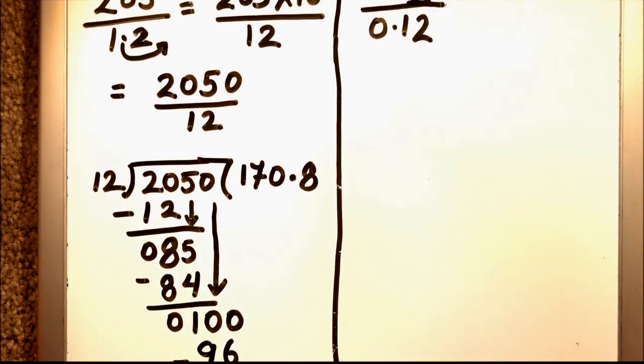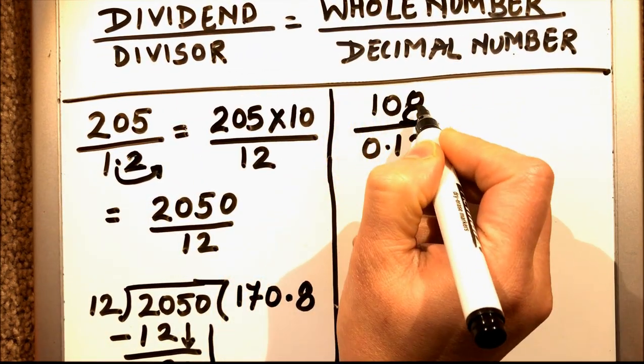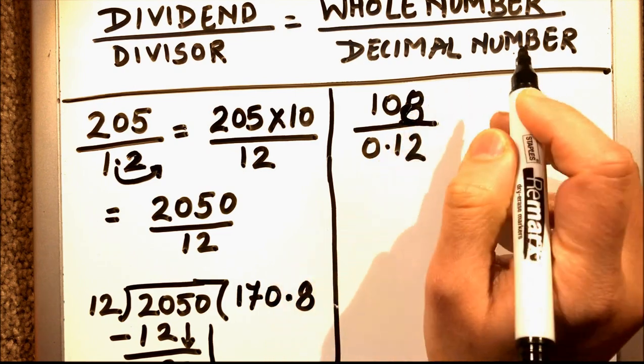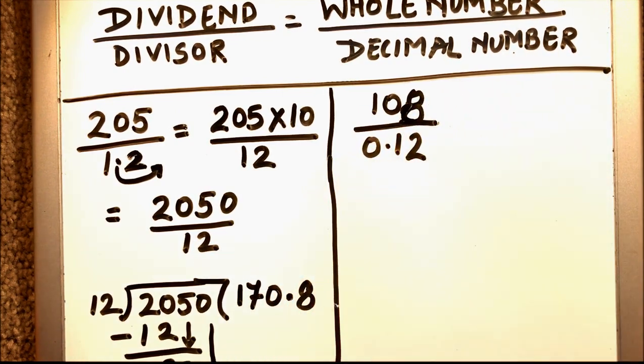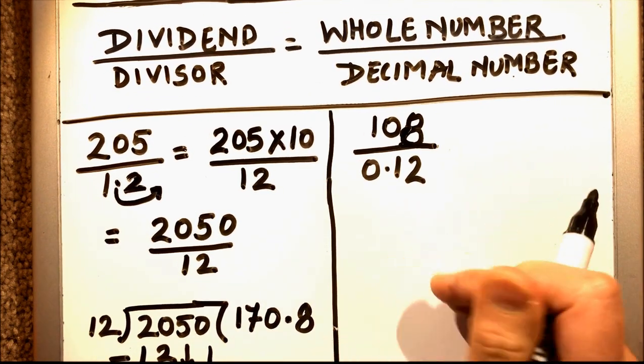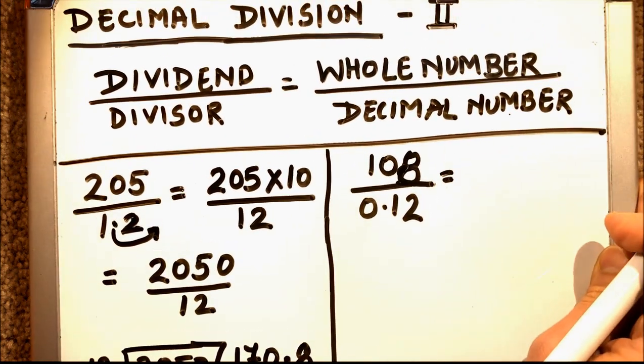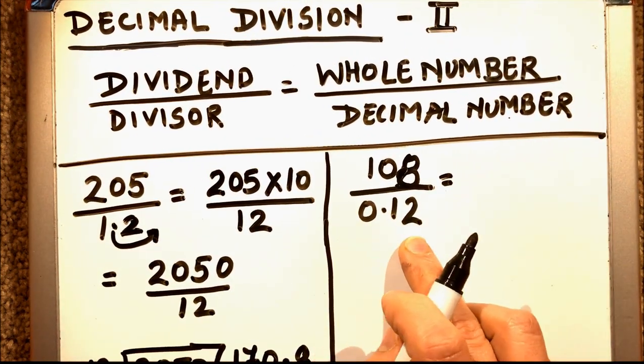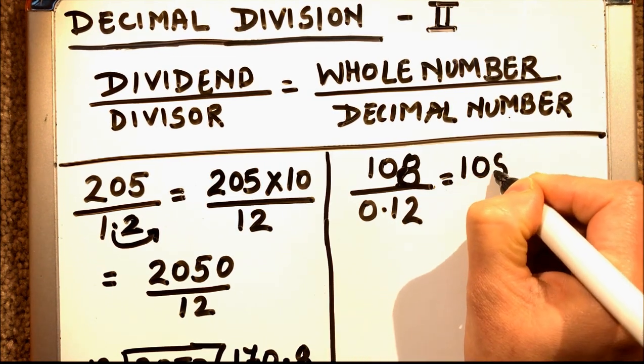Let's take another example. Here I am taking a simple example: 108 divided by 0.12. So here our divisor is a decimal number with two decimal places. So what we'll do is add that many zeros to convert this divisor into a whole number.